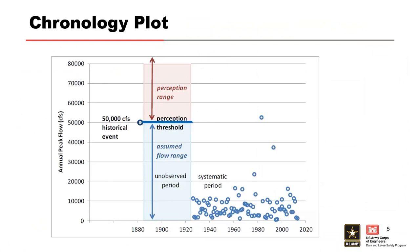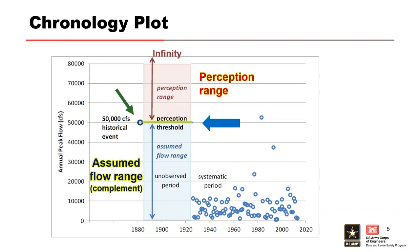Shown here is another example of a chronology plot to illustrate the threshold concept. In this example, the indirect perception threshold is based on knowledge that the historical event is larger than the known flood that occurred during the historical period. This means that all the other unobserved annual maximum flows during the historical period must have been less than that largest observed historical event. A perception threshold defines the region where floods can be observed and are recorded if they occurred.